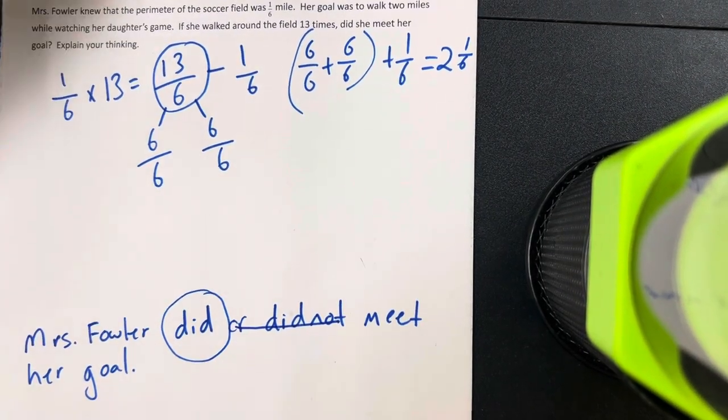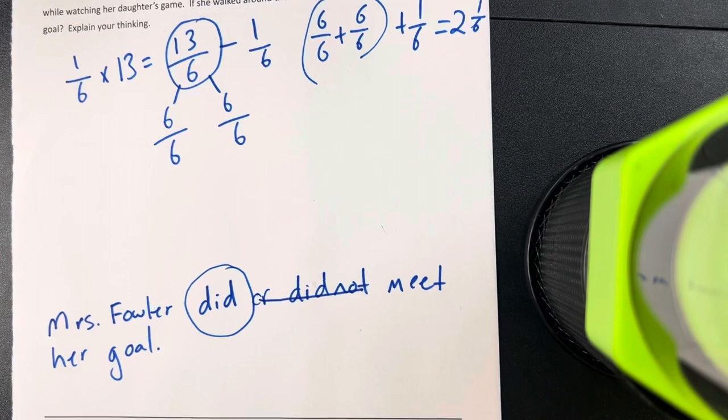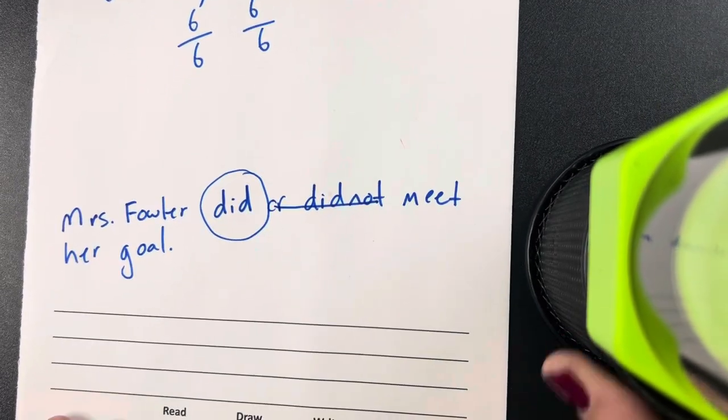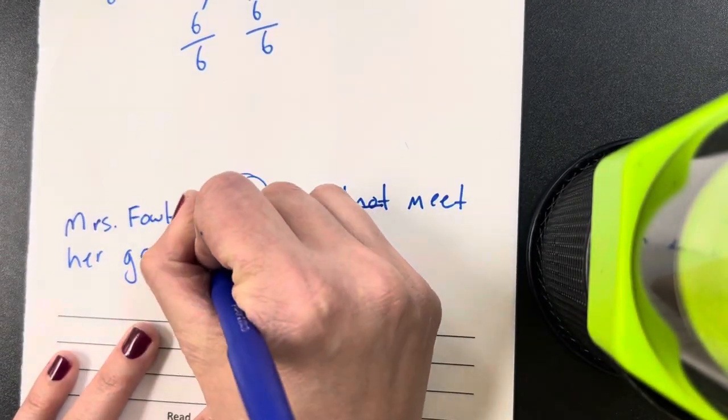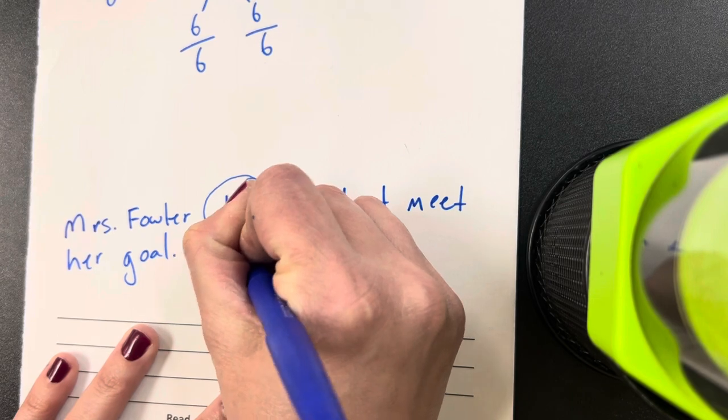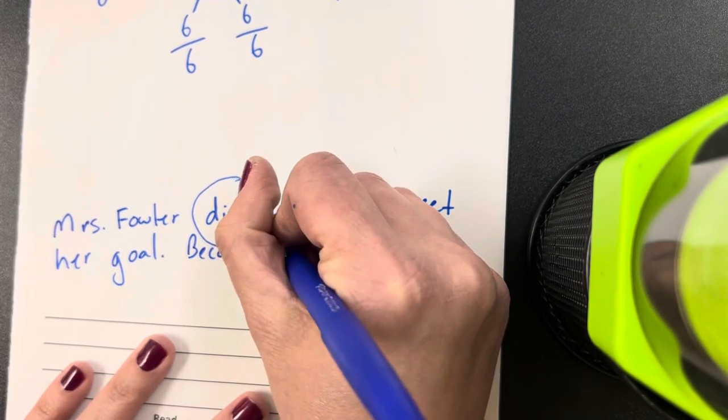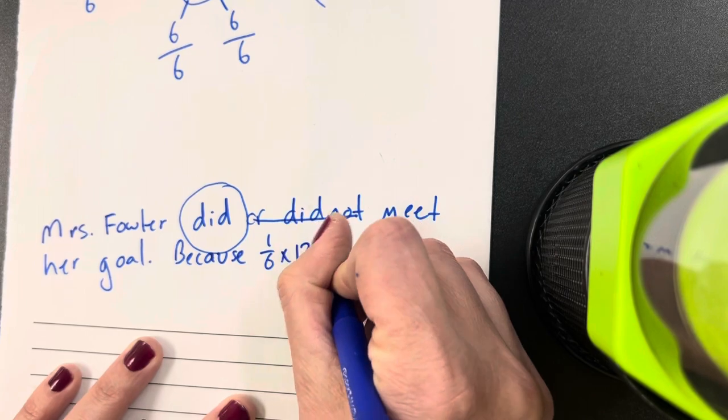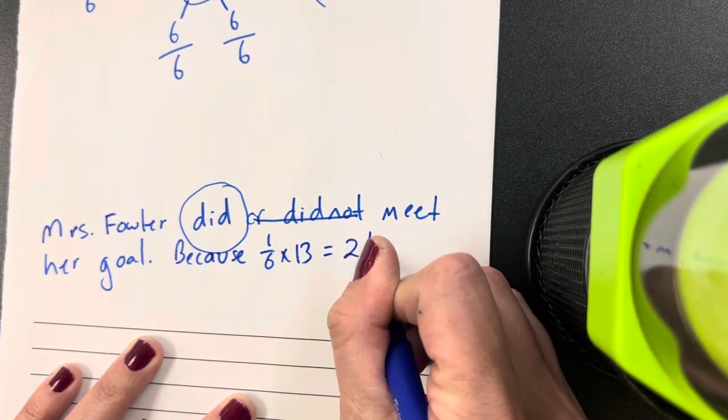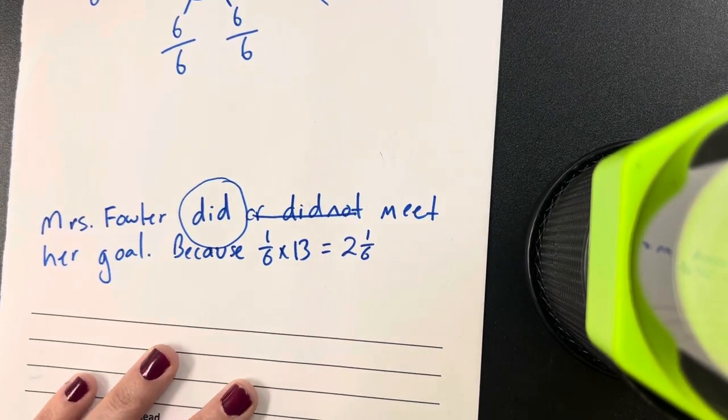I have to explain my thinking. Well, I can say she met her goal because one-sixth times thirteen equals two miles and one-sixth of another mile.